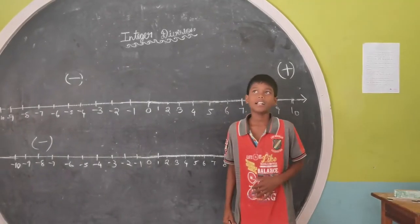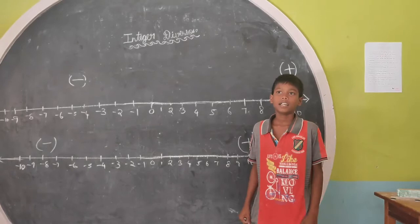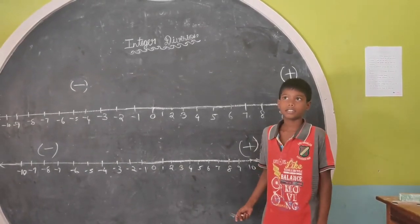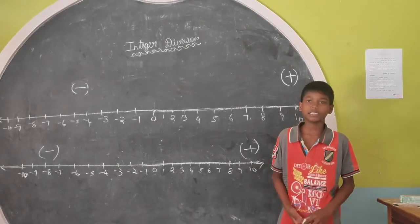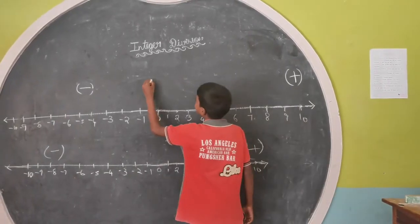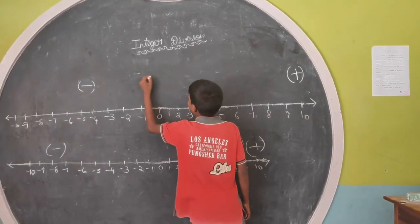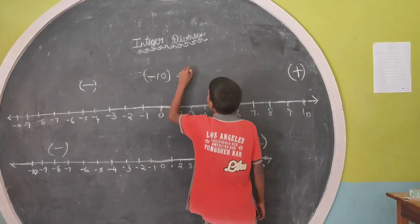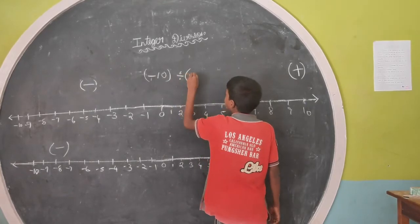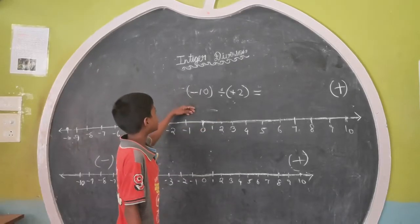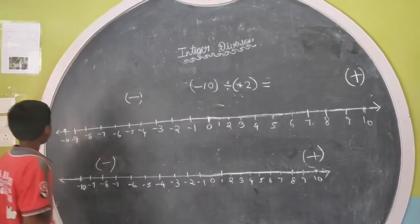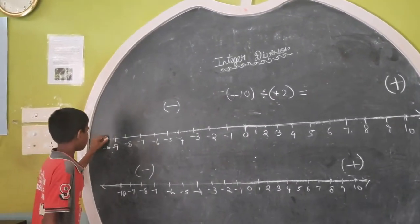My name is Kailash Edwan, I am studying second standard. I am going to tell about the integer using number line. The first question is plus minus 10, plus 2. The question is minus 10 divided by plus 2. First we put the point on minus 10.